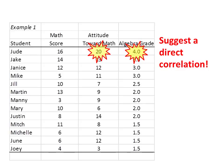Now looking at example 1, we can look at Jude's grade — his algebra grade was a 4.0, and his attitude toward math score was the highest attitude toward math score. These suggest that there is a direct correlation between attitude toward math and algebra grade.